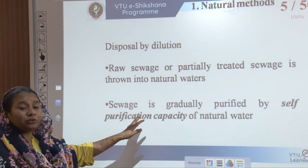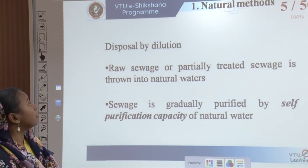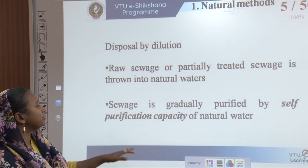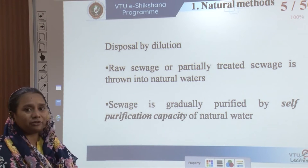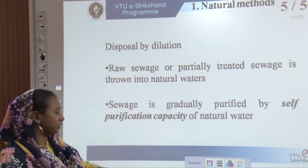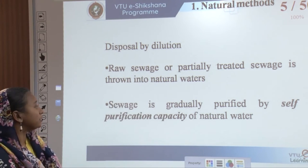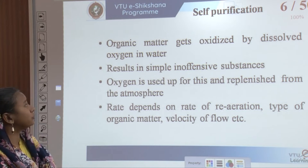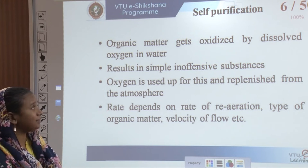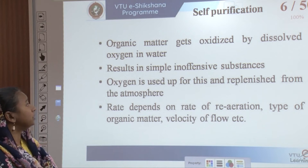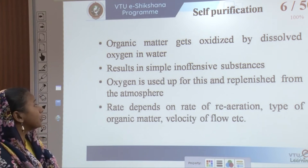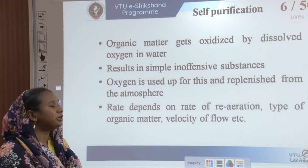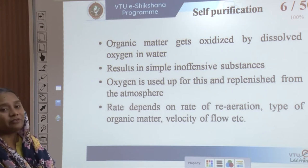In natural methods, the first is disposal by dilution. Raw sewage or partially treated sewage is thrown directly into natural waters and is gradually purified by the self-purification capacity of the natural water. This is called disposal by dilution because as it dilutes over time, it self-purifies as it moves through the water course. The organic matter gets oxidized by dissolving the oxygen in the water, resulting in simple inoffensive substances. Oxygen used up is replenished from the atmosphere, and the rate depends on re-aeration, the type of organic matter, and the velocity of flow.